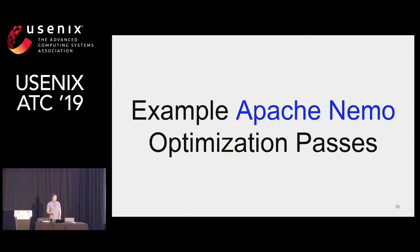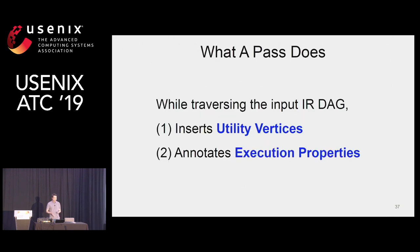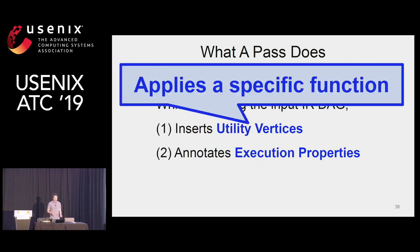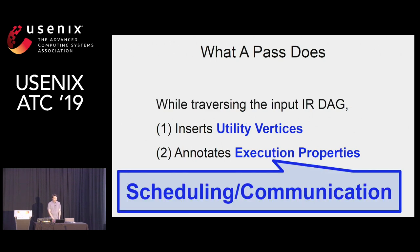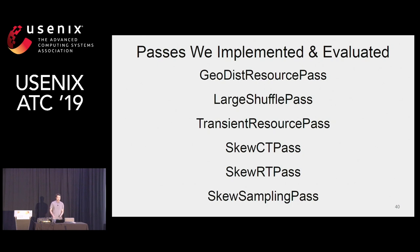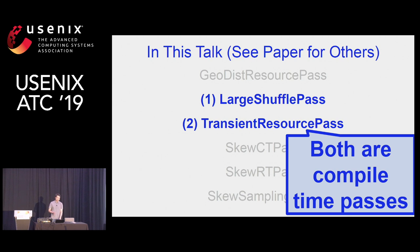Now let's look at some optimization pass examples in more detail. A pass typically traverses the input IR DAG and inserts utility vertices and annotates execution properties. A utility vertex applies a specific function, and an execution property configures a specific scheduling or communication method. We've implemented various passes for different deployment scenarios; in this talk I'll cover the large shuffle pass and the transient resource pass, and both are compile-time passes.